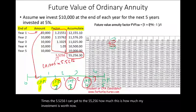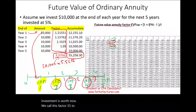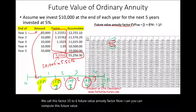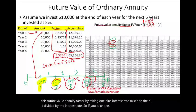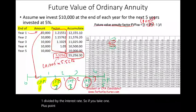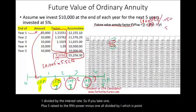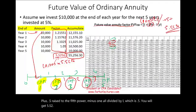We call this factor 5.5256 the future value annuity factor. You can compute this future value annuity factor by taking (1 plus the interest rate) raised to the n, minus 1, divided by the interest rate. So if you take (1 + 0.05)^5 minus 1, all divided by i = 0.05, you will get 5.5256.